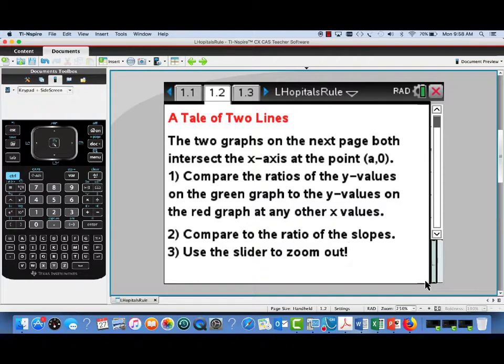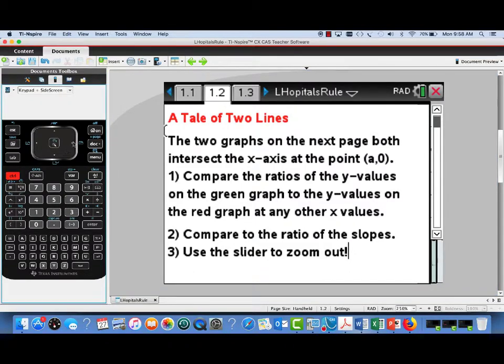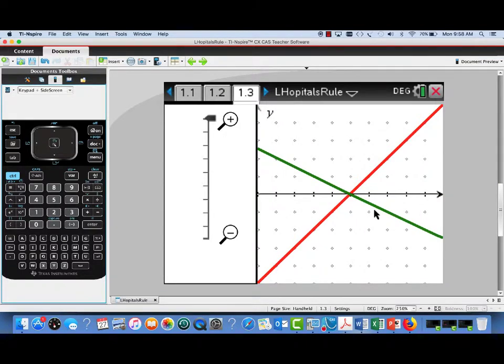We're going to call this document A Tale of Two Lines, and you're going to see a couple of graphs that cross the x-axis at the same point, A, 0. Now what I'd like you to do is when you look at these graphs, first of all, let's compare the y values on the green line to the y values on the red line, specifically the ratio of those values.